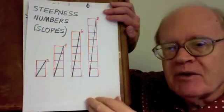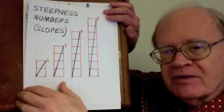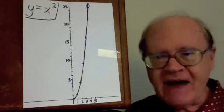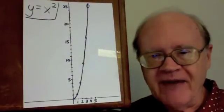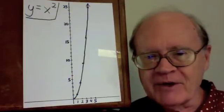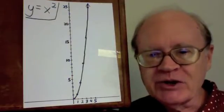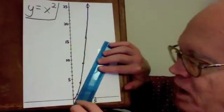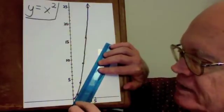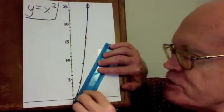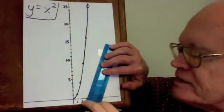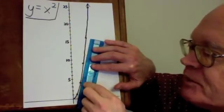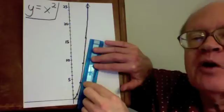The bigger the steepness number, the steeper the line is. For this graph, it's a fact of calculus that the steepness number at any particular point is simply 2 times the x value at that point. Where the x value is 1, it is steep enough to go over 1, up 2. Where the x value is 2 — 2 times 2 is 4 — right there, it's steeper; steep enough to go over 1, up 4.